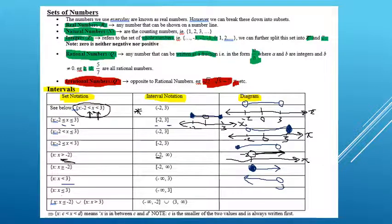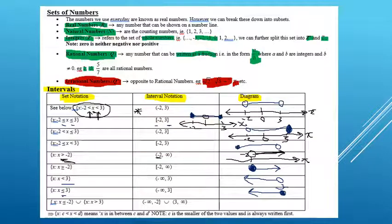The next one: x is less than or equal to 3. So at 3 we'd have a circle but colored in, with the values to the left. The final example has two sets: one says less than or equal to negative 2, and the other says greater than 3 — they don't overlap. So we have a closed circle at negative 2 with an arrow to the left, then a gap, then an open circle at 3 with an arrow to the right.